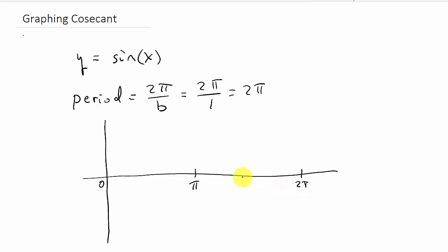We'll go halfway between 0 and 2π, which is π. Then halfway between π and 2π: π plus 2π is 3π, half of that is 3π/2. And halfway between 0 and π: 0 plus π is π, divide by 2, that's π/2. The amplitude is 1, so our max and min are 1 and negative 1. I do have a separate video on graphing the sine function that goes into a lot more detail.